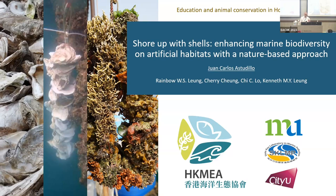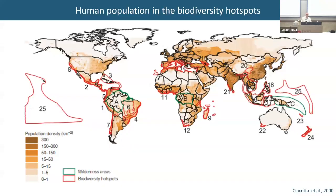Today I'm going to talk about the use of oyster shell reefs for ecological restoration. Let me start with perhaps a more lecture-style approach to biodiversity. In this map, you can see that the dark brown areas are the more populated regions, and the red line shows the hotspot of biodiversity. It's not new that there is a correlation between where human population grows and its relation to biodiversity.